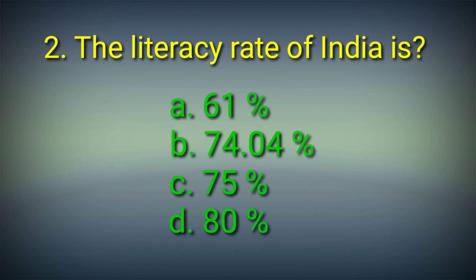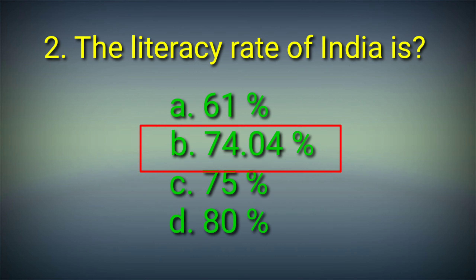Second question: The literacy rate of India is — Options: A. 61%, B. 74.04%, C. 75%, D. 80%. Answer: Option B. 74.04%. The literacy rate of India is 74.04%.